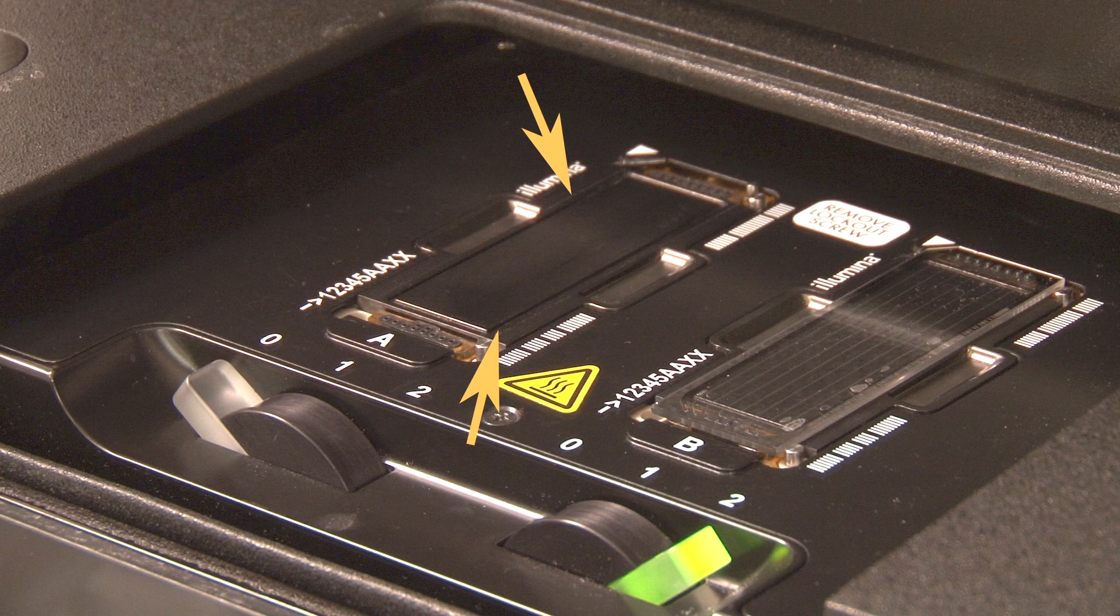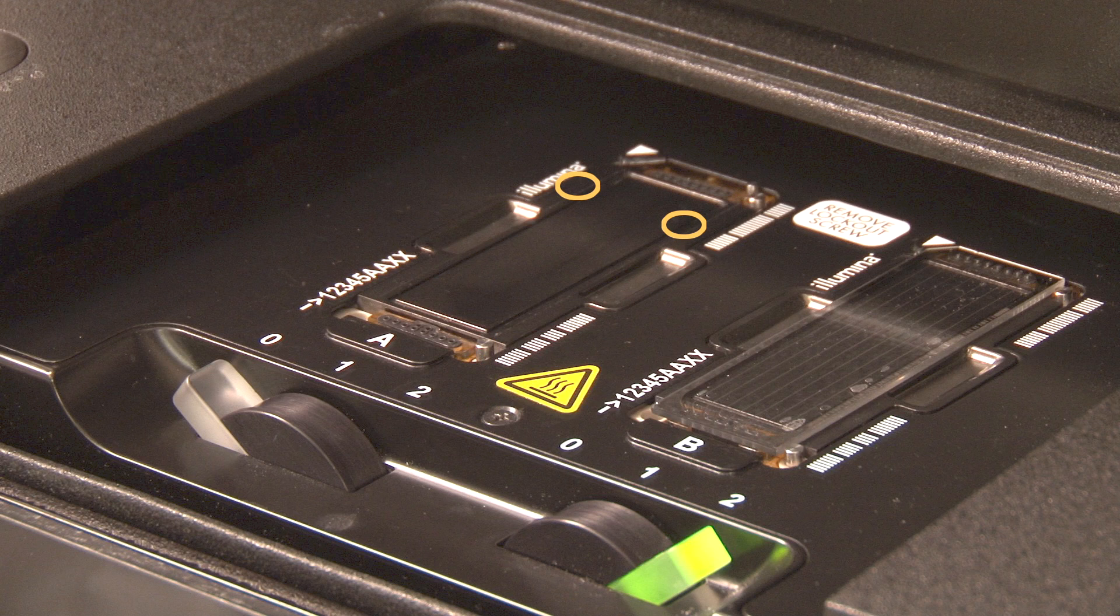Also, inspect the ridges around the flow cell and the vacuum holes to ensure that they are free of any debris. Any debris in the ridges or vacuum holes can prevent the flow cell from being firmly held to the stage for the entire sequencing process.